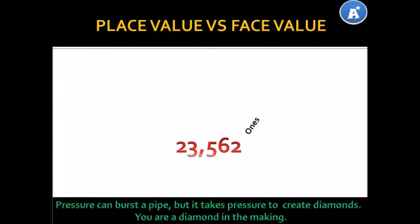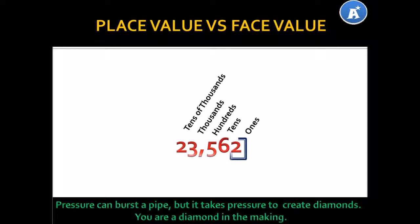The 2 is in the 1's position. The 6 is in the 10's position. Our 5 is in the 100's position. The 3 is in the 1,000's position. Now, all that I've called is based on place value — it's the place value of the number. The place value is based on the position of the number. Let's look at it.